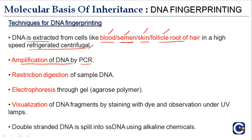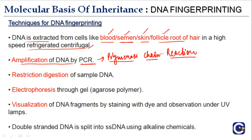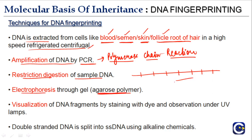Then amplification of DNA is done by PCR — polymerase chain reaction — because the amount of DNA obtained from a crime scene can be small. After amplification, restriction digestion is performed to cut the DNA into smaller parts. Then electrophoresis is carried out through an agarose gel so that DNA fragments separate based on size. Finally, visualization is done by staining with dye and observing under UV lamps.